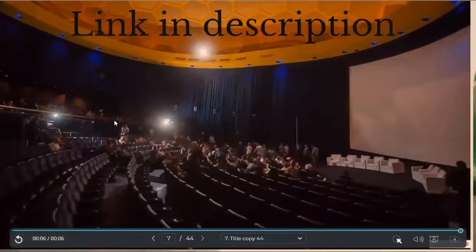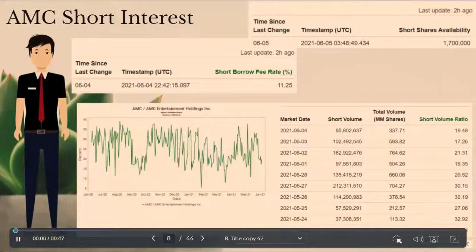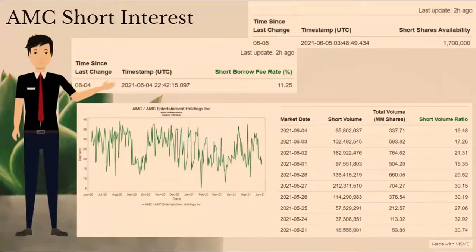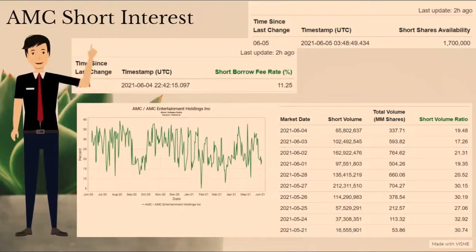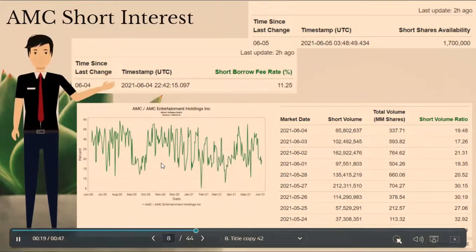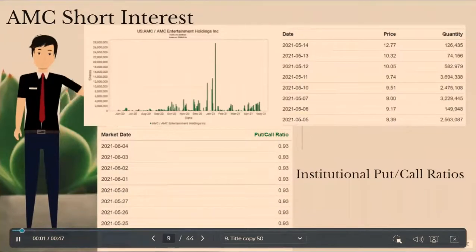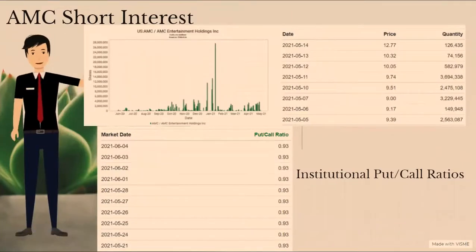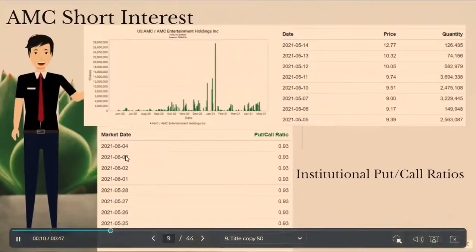So I'll start by quickly catching you up to speed with the latest short interest metrics. There are 1.7 million short shares, up from half a million from last week. The short borrow fee rate is 11.25%, up from 7.74%. Also, the short volume ratio is 19.48%, down from 20.52%. The number of fails to deliver shares is around 126,000 shares, down from just under 200,000 shares. And the ratio of institutional puts-to-calls is steady at 0.93%.